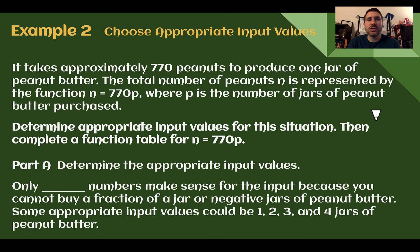Example 2, Choose appropriate input values. It takes approximately 770 peanuts to produce one jar of peanut butter. The total number of peanuts, n, is represented by the function n equals 770p, where p is the number of jars of peanut butter purchased. Determine the appropriate input values for the situation, then complete a function table for n equals 770p.